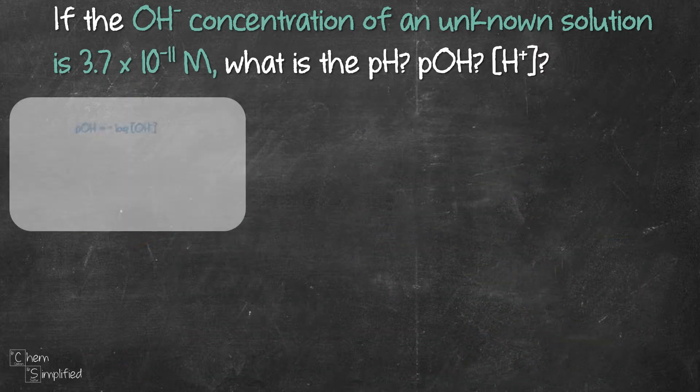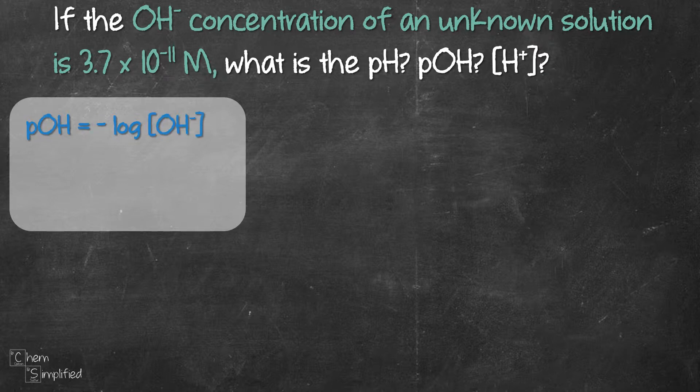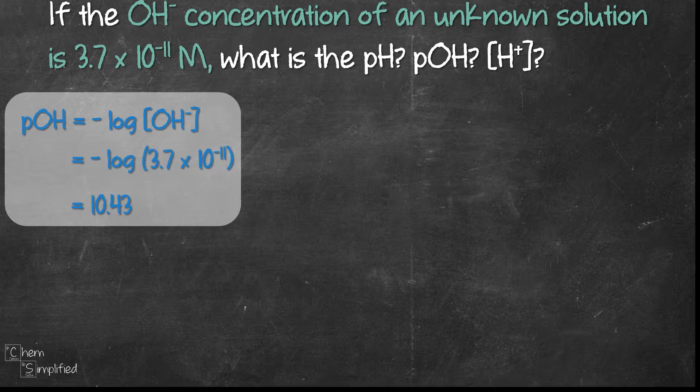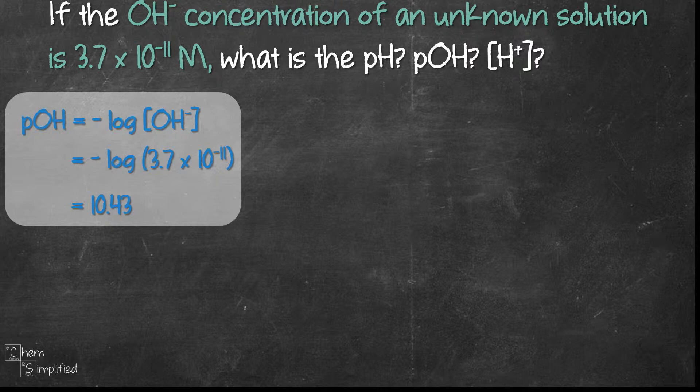The first formula is pOH equals negative log of OH-. We plug in the value of OH- and that gives us 10.43 for pOH. There is no unit required for pOH and pH so we just leave the number as is.